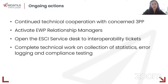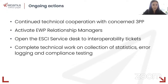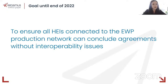We are completing the technical work on the collection of statistics and error logging, which will provide the Commission, the consortium, national agencies, and universities with better information to understand at all times if there is a problem, what the source of the problem is, and how to focus efforts to address it as soon as possible. We need to ensure that all universities are able to conclude agreements without any interoperability issues by the end of 2022. And if any university is still facing a technical problem, we can activate the relationship managers to set up bilateral meetings to make sure problems are overcome.